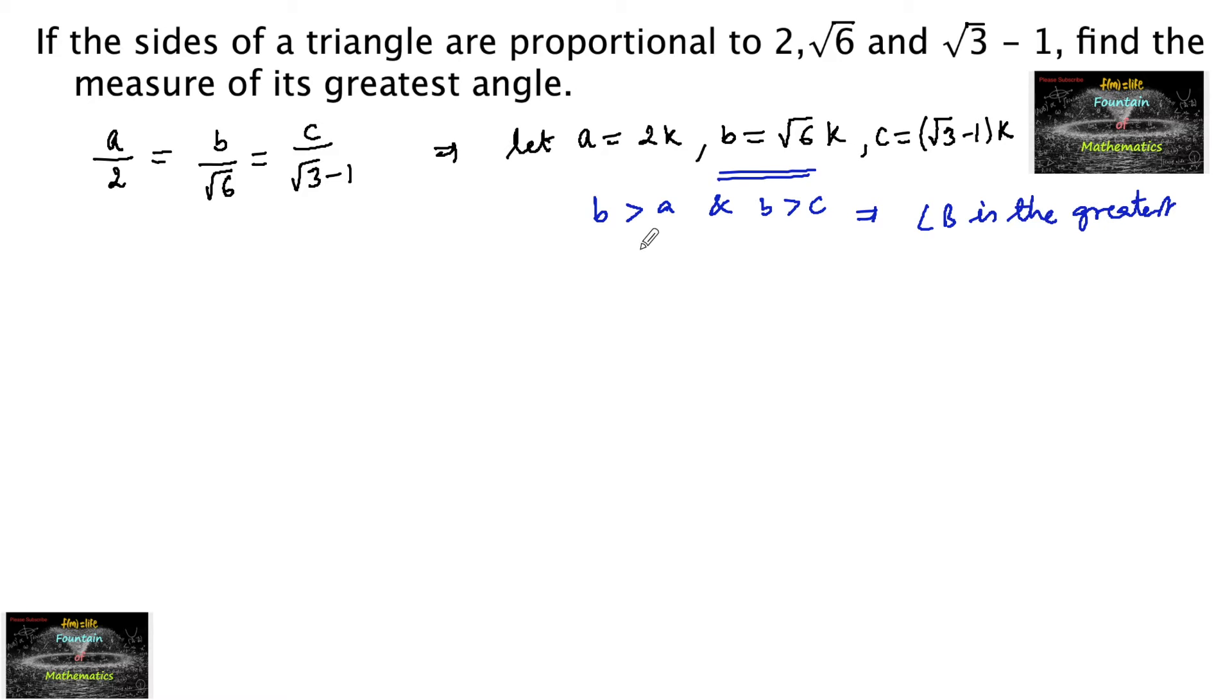Which implies that angle B will be the greatest. The angle which is opposite to the greatest side will be the greatest angle. So angle B is the greatest angle of triangle ABC.